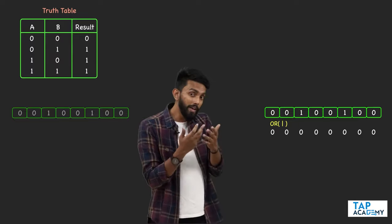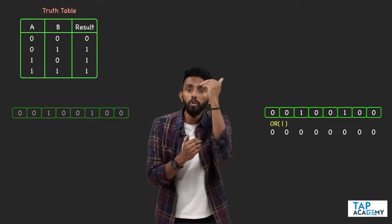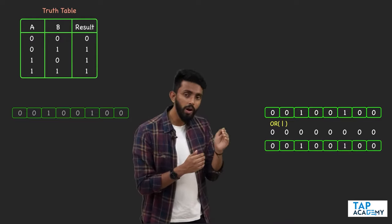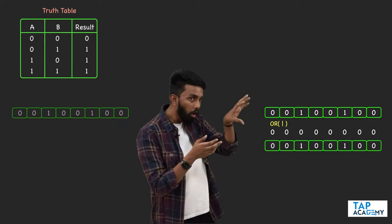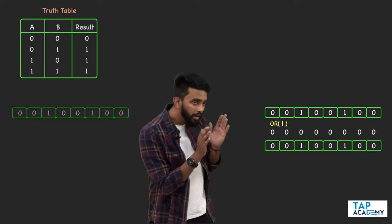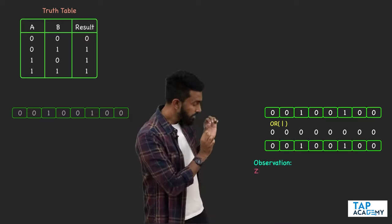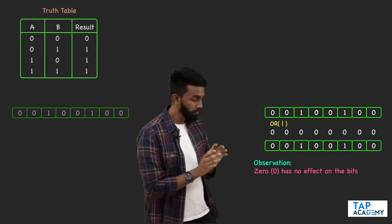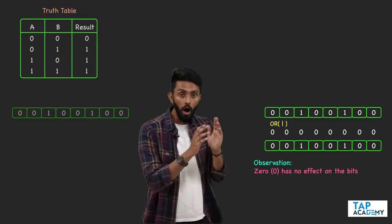If you notice, zero has no effect on the original bit. If I do OR operations it gives back zero, zero, one, zero, zero, one, zero, zero — which is the same as the original. So the observation is: zero has no effect on the bits.